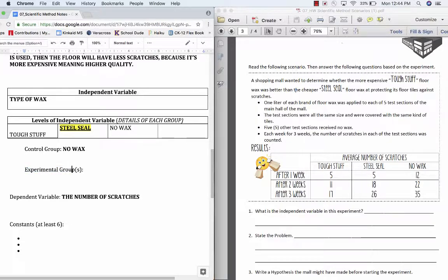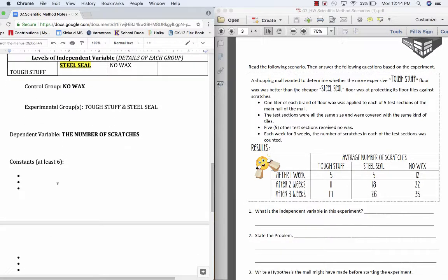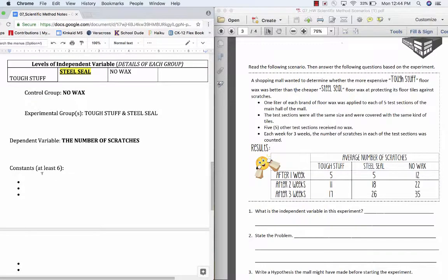The experimental groups are the groups that do get the independent variable. So in this case, the groups that did get the type of wax. We noticed that there are two groups that got different types of waxes, and that was group one and two being Tough Stuff and Steel Seal. We talked about the dependent variable. That's what we expect to see as the result of applying different types of waxes in this case.